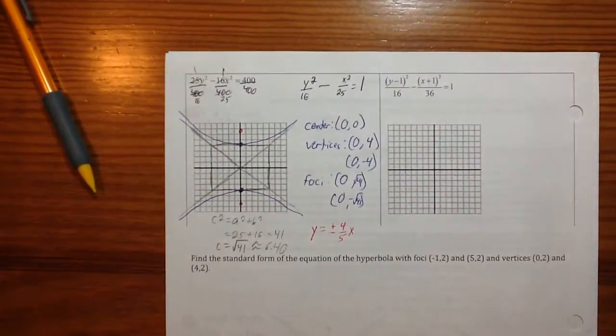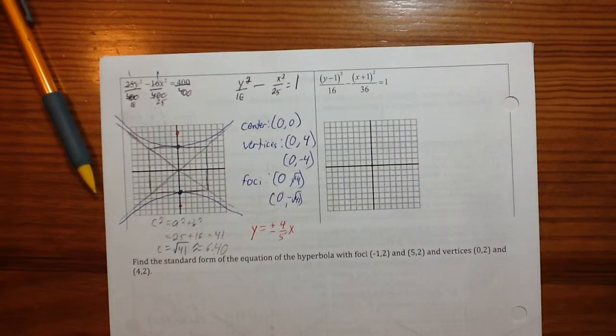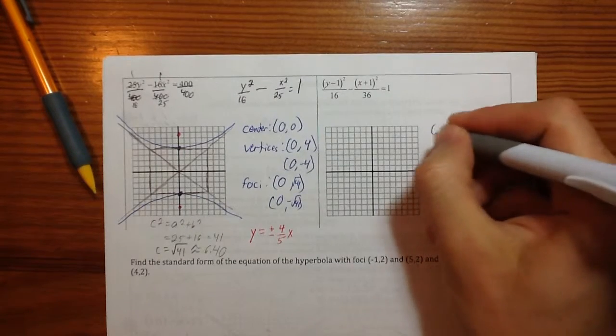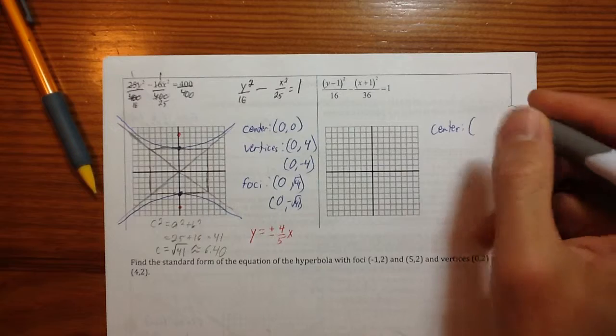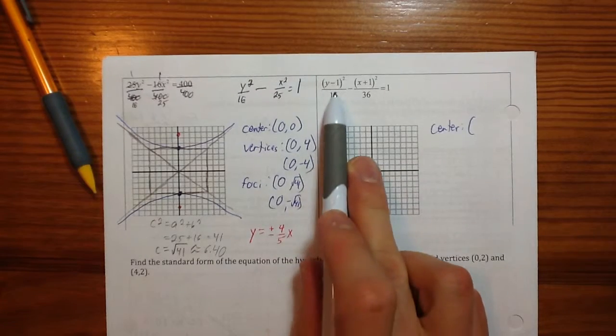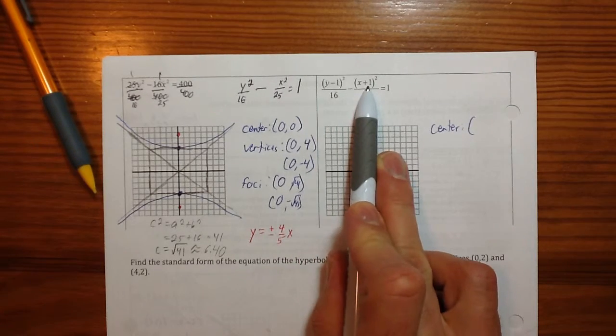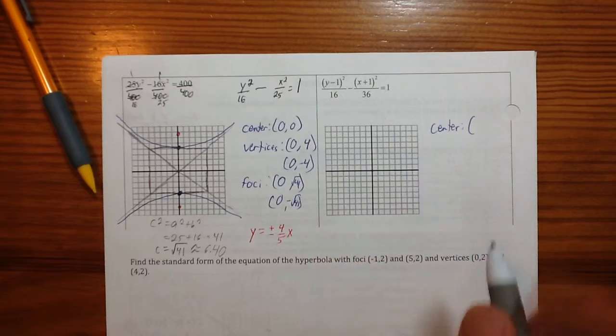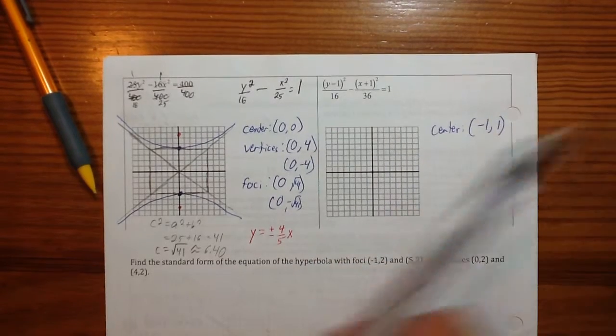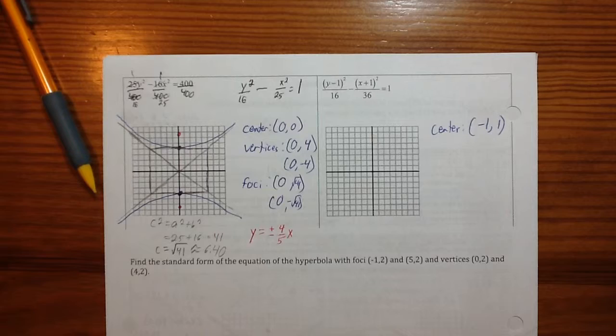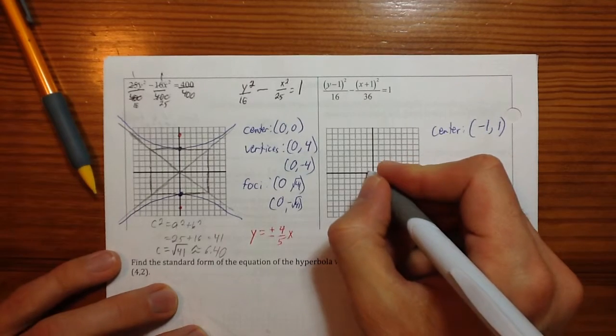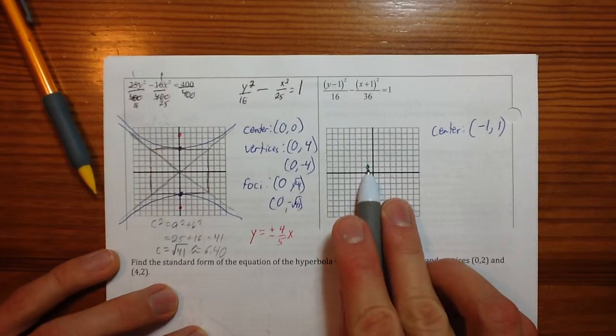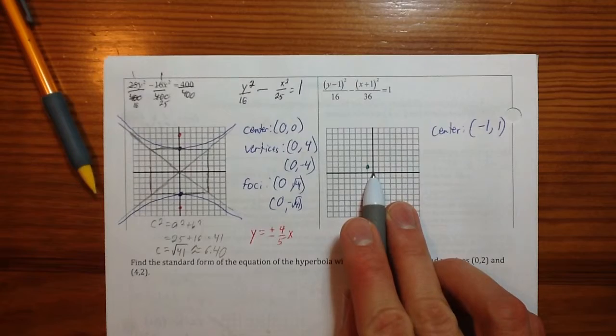The next one has a center that is not at the origin and that is going to change things just a little. The center is at, I almost said it's at (1, -1). Look where the x is. It's at (-1, positive 1). Negative 1, positive 1. Before I go any further, I'm just going to come over here to my graph and I'm going to go ahead and put that as my center. Now when I make my box, that will be the center of my box. Up until now, it's been the origin and life has been easy, but not with this one.